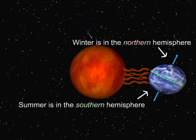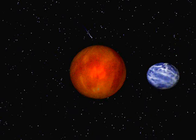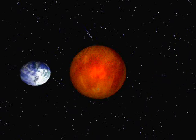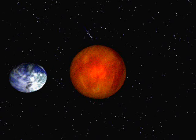Why do we have seasons on Earth? The Earth has seasons because the Earth is tilted as it revolves around the Sun.